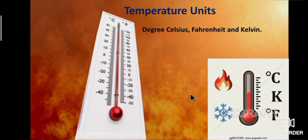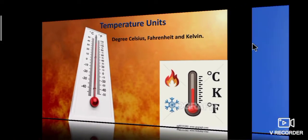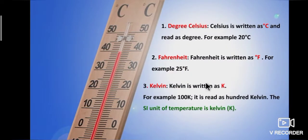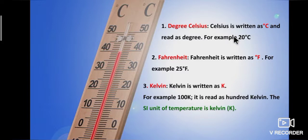Now we are going to study about temperature units. There are three units used to measure temperature. The first one is degree Celsius — written as °C and also called centigrade. For example, 20°C is read as 20 degree Celsius. The second one is Fahrenheit — written as degree Fahrenheit, for example 25°F.